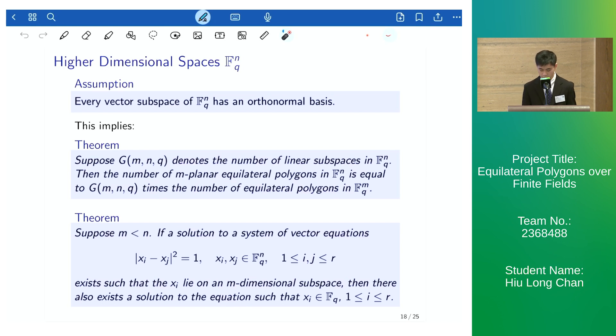And then we obtain the number of m-planar equilateral polygons being this number times the number of equilateral polygons on just the plane.